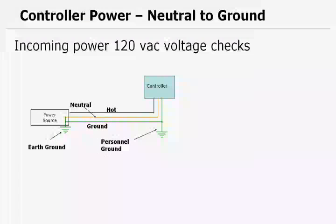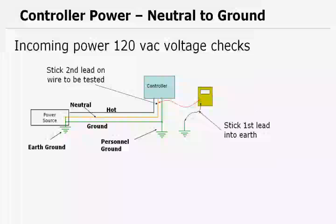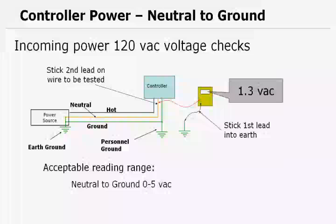Now let's check a reading from neutral to ground. Put our voltmeter first stick into the earth, second stick onto the neutral wire. And let's just use this as an example. We've got a 1.3 volt AC reading. Well, 0 to 5 volts is considered an acceptable reading. Anything above 5 volts is a problem.